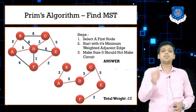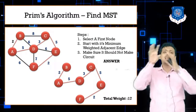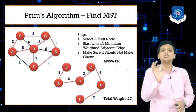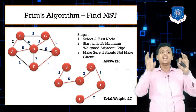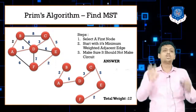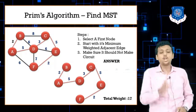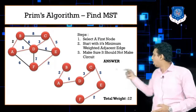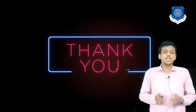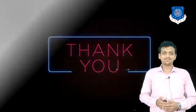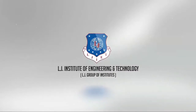To summarize the steps: first, select any vertex. Then select the adjacent edge with minimum weight. After that you will have two vertices, so select the adjacent edge with minimum weight from both. Keep repeating these steps, making sure not to form a cycle, until all nodes are connected with minimum edges. That is it for today's lecture. Thank you so much.